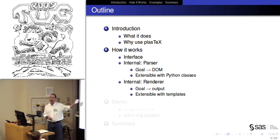Basically there's an interface and there's two steps, the parsing and the rendering. The goal with parsing is to generate a document object model or DOM, which is just a kind of tree structure of data, and you can extend that with Python classes. And the next step, the rendering, the goal is to get our output, and that's extensible with templates.